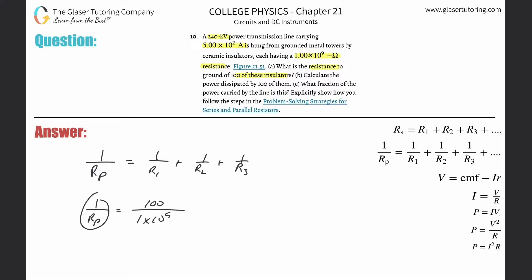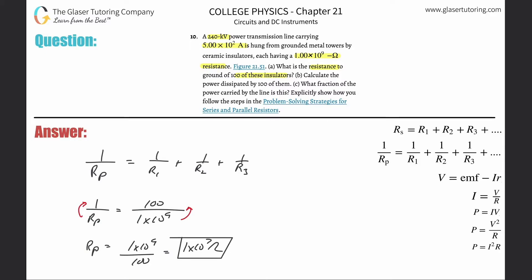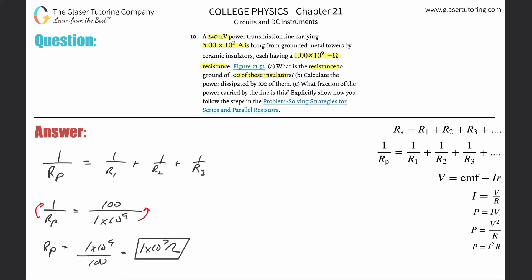I want to solve for R_P, not 1 over R_P. So flipping it around, R_P equals 1 times 10 to the 9th divided by 100. The equivalent resistance in parallel is simply 1 times 10 to the 7th ohms. That's the answer for letter A.